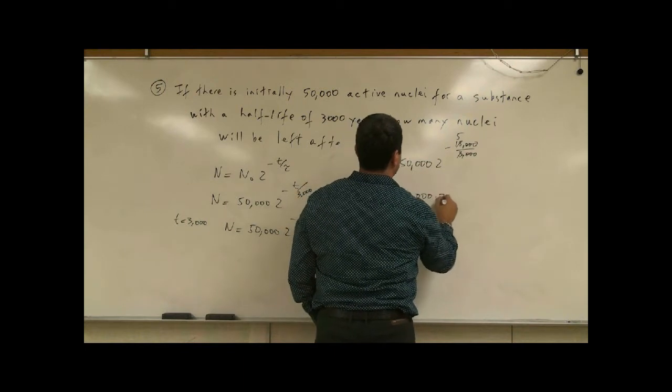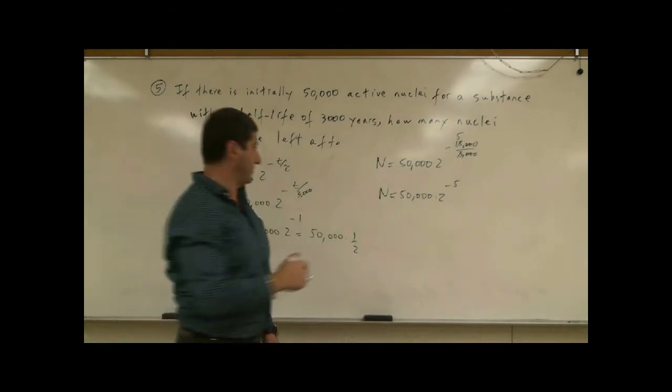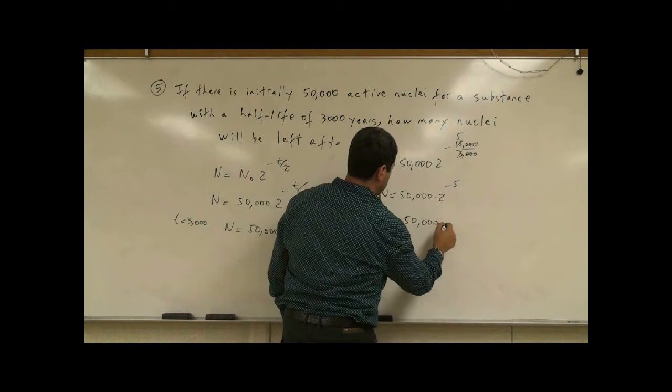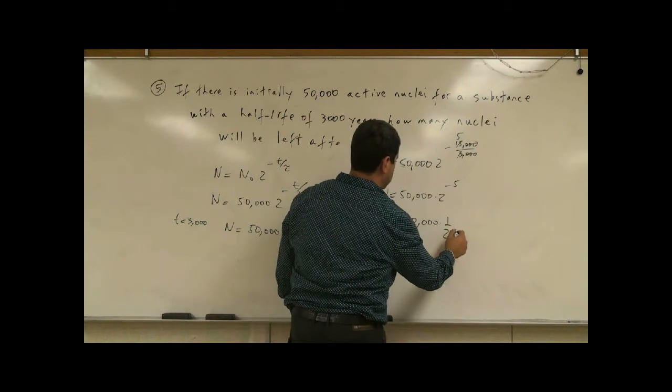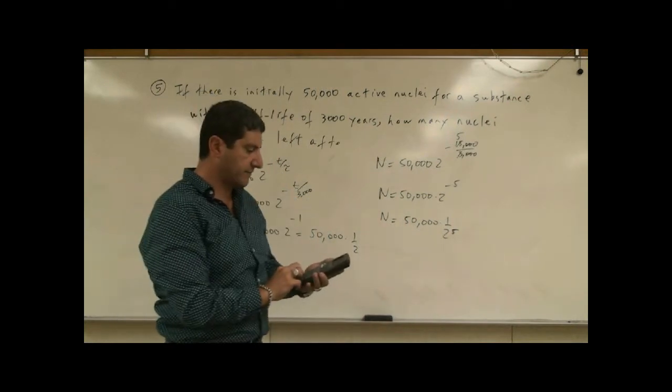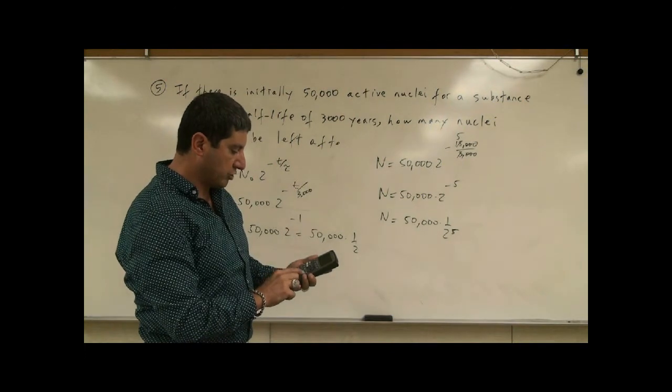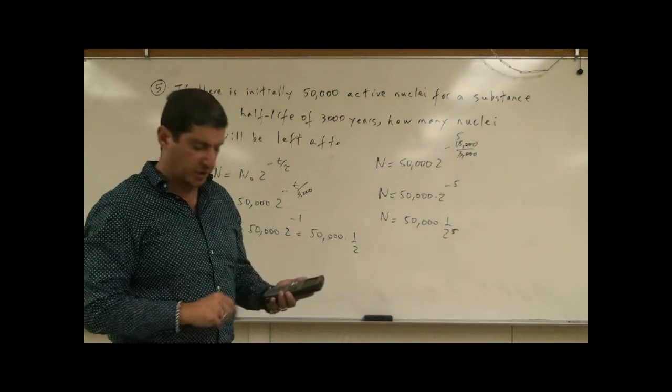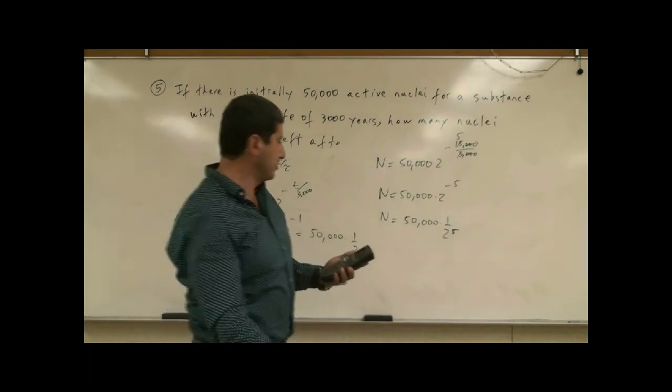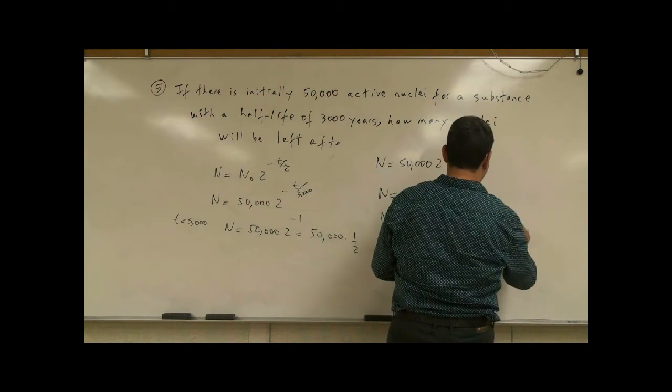Which is the same thing as writing 1 over 2 to the 5th. 50,000 times 1 over 2 to the 5th. 2 to the power of 5, that's 32. Or you can have the calculator do that for you. 50,000 divided by 2 to the power of 5, which is 32. So 50,000 divided by 32, that's going to give you 1,562.5.